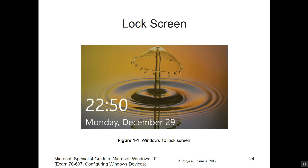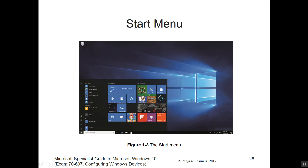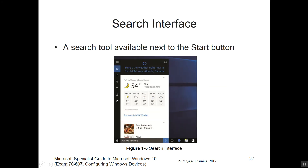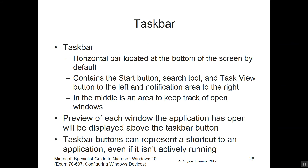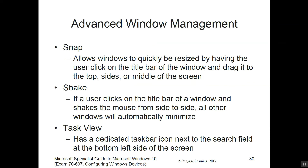The start menu is similar to Win 7 in look and feel — click it and it comes up, with jump list integrated. There's a search interface at the bottom — the 'ask me anything' bar — that's Cortana, making it easy to search the internet or anything you need. The taskbar is horizontal at the bottom but can be moved around. The notification area is on the right side of the taskbar. Advanced windows management includes snap, shake, and task view.